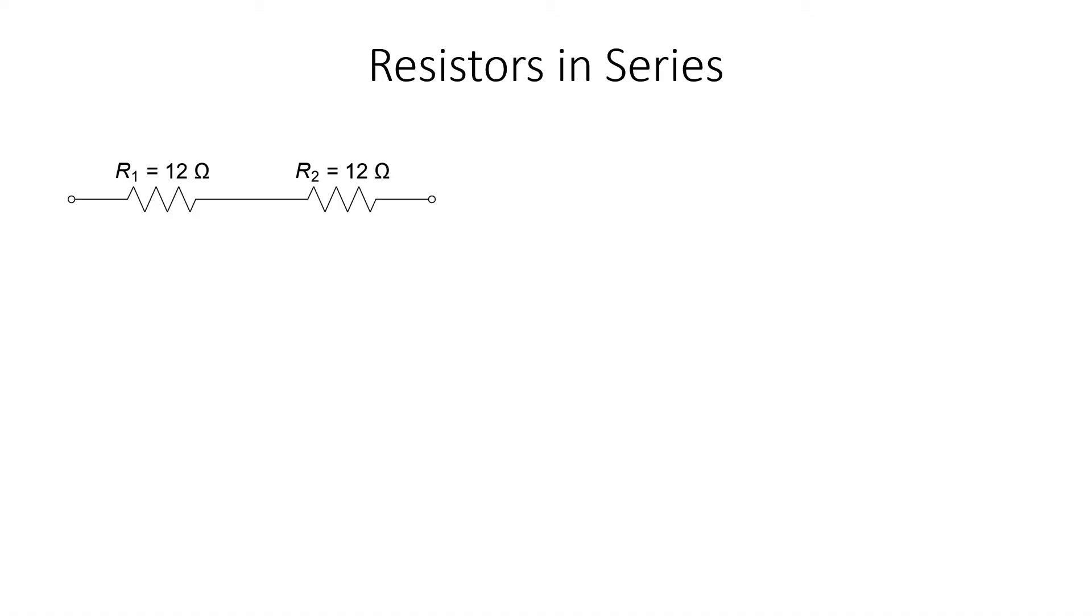If I want to replace two circuit elements with a single equivalent circuit element, what I'm really saying is that I want the voltages and currents everywhere else in the circuit to remain the same after the replacement. In this particular example, the equivalent resistance is 24-ohms. I've just added the two 12-ohm resistors together.